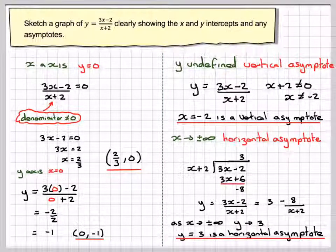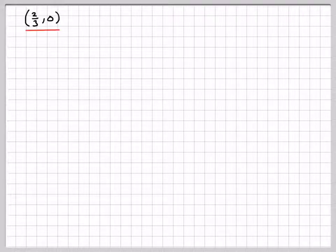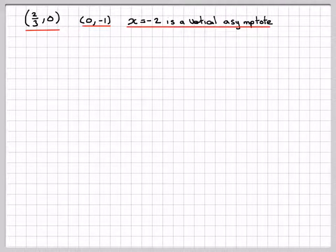Now we've got to sketch the curve. Let's write down all this information: the x-intercept, y-intercept, vertical asymptote, and horizontal asymptote.